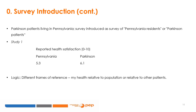The survey varied how Parkinson's patients were introduced — either as Pennsylvania residents or as Parkinson's patients. Respondents reported a health satisfaction of 5.3 when the survey said 'Pennsylvania residents,' and 6.1 when it said 'Parkinson's patients.' The logic is that the names provide different frames of reference: how their health is relative to the general population versus relative to other patients.